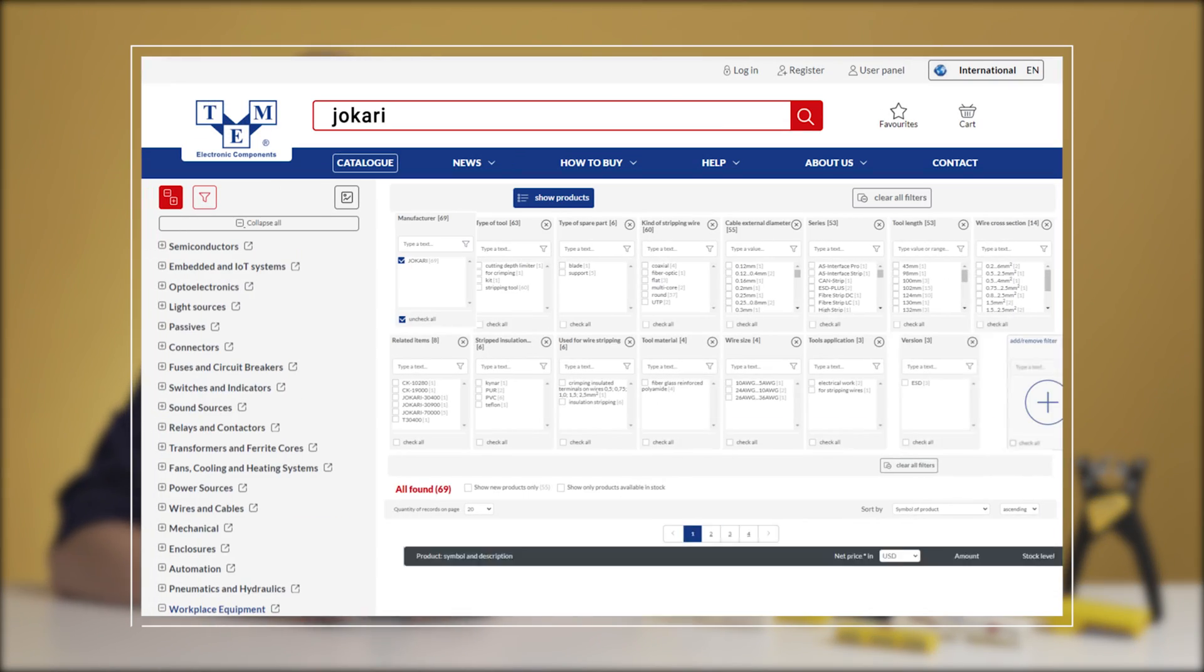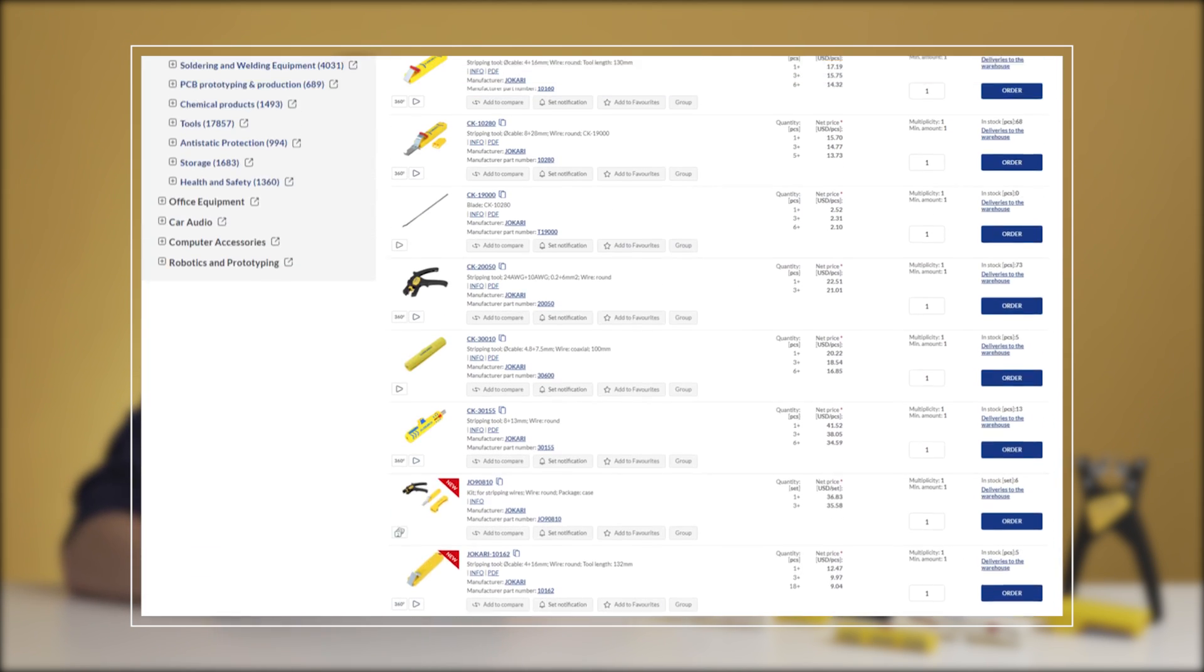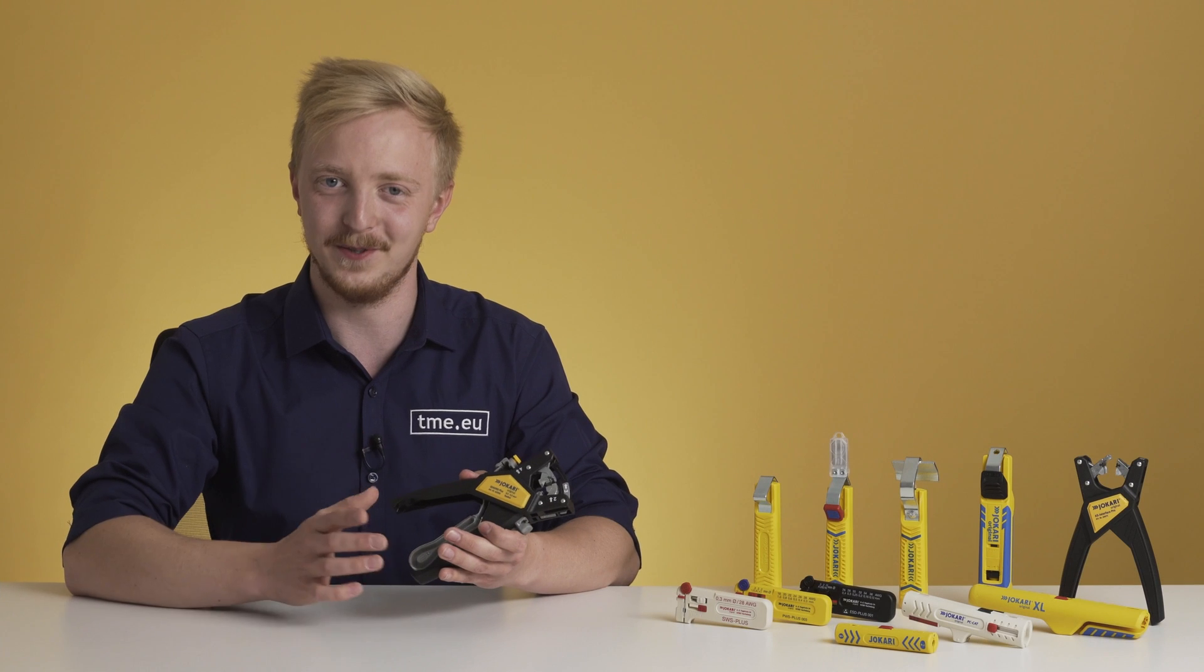Now you can choose from the best Jokari products on the TMI website. Just use the parameter booth to find the exact wire stripper for you.